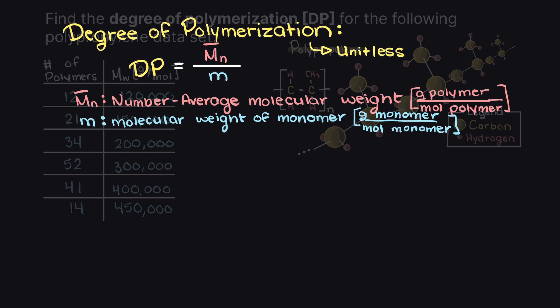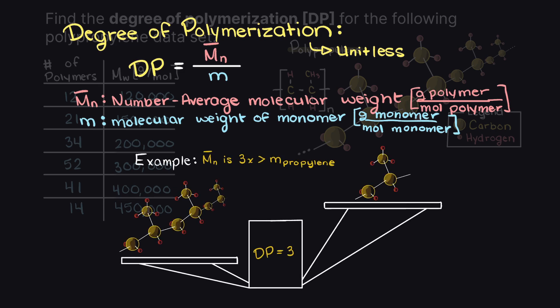Which should make sense, right? We are trying to determine the amount of monomer units that our large polymer consists of. So, if we weigh our polymer and divide it by the monomer molecular weight, then we will get our degree of polymerization.